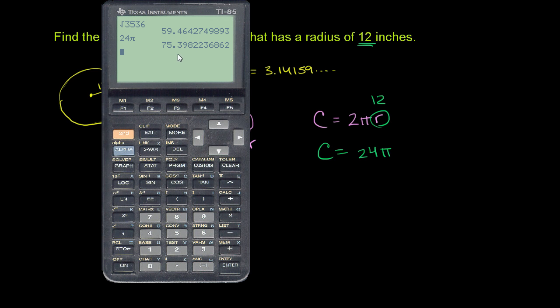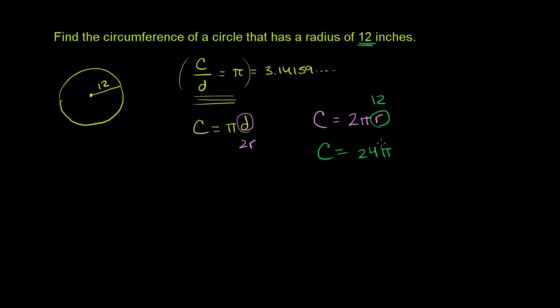So depending, they haven't told us exactly how much precision they want over here. But if we round to the nearest, even if we round to the hundreds place, we get 75.40. So I'll go with that. So this is approximately equal to 75.40. And we're done.